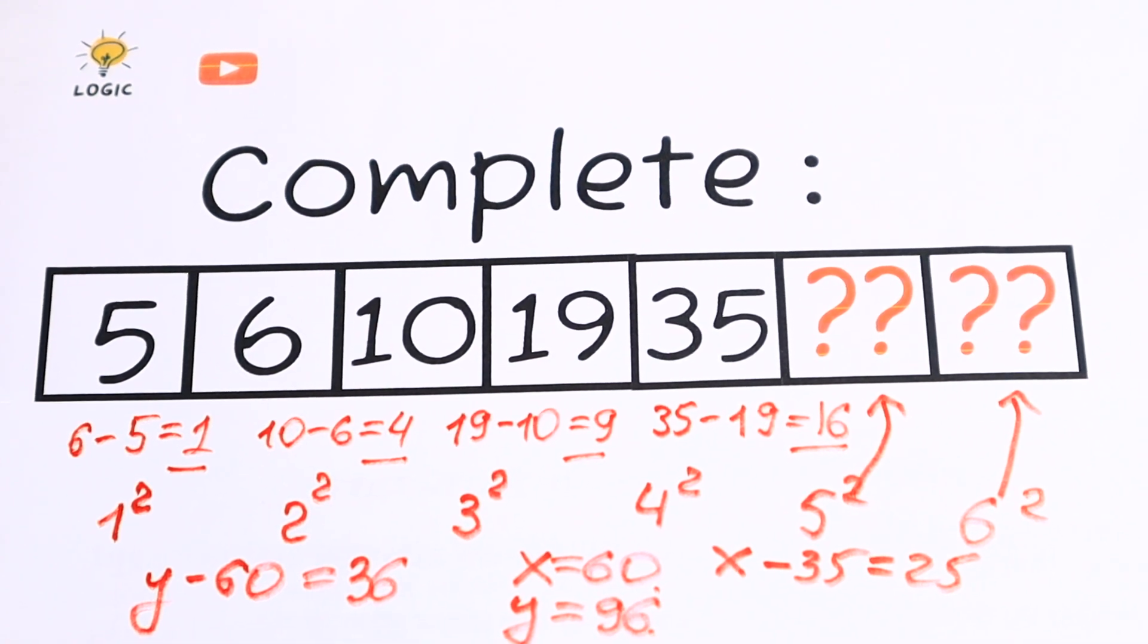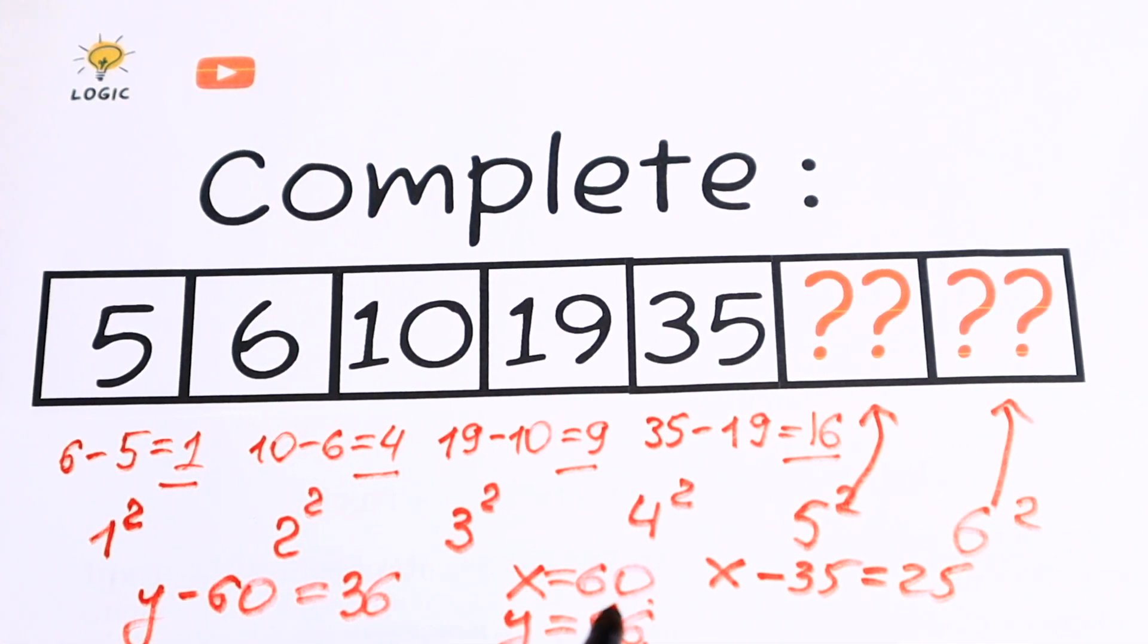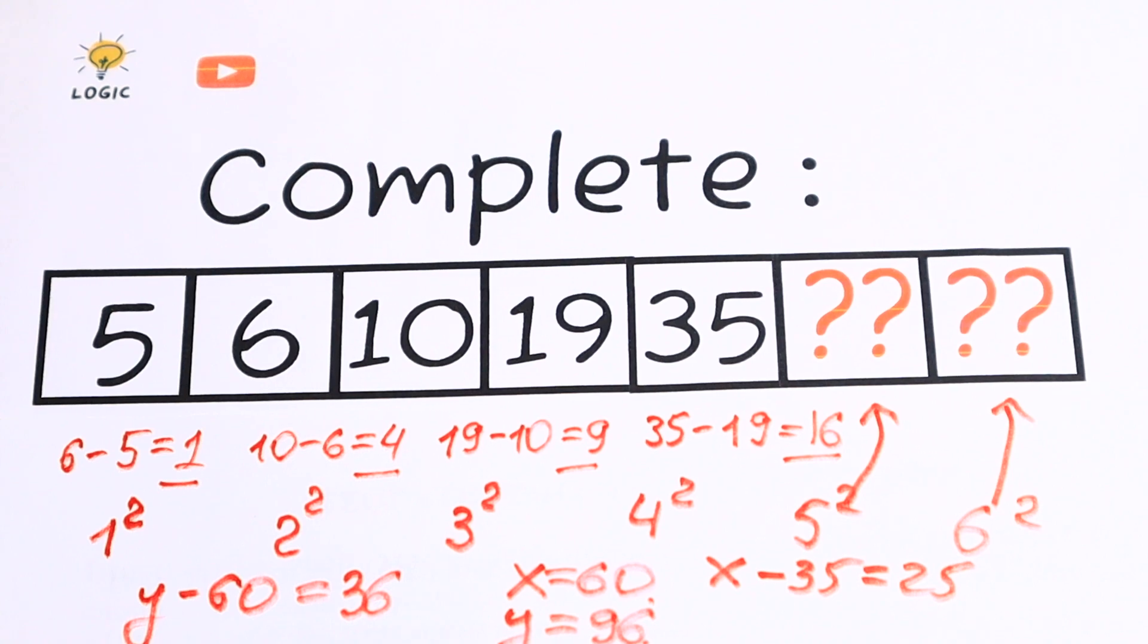And this will be our answer. So 1, 2, 3, 4, 5. The sixth number will be 60. And the seventh number will be 96.